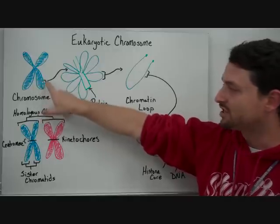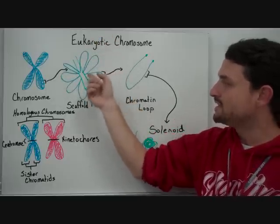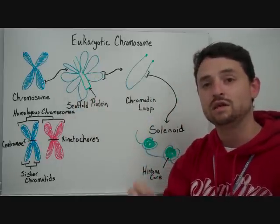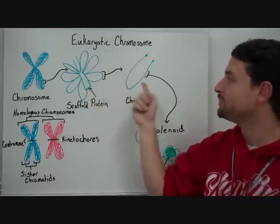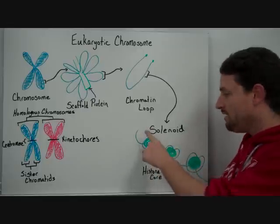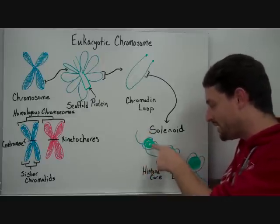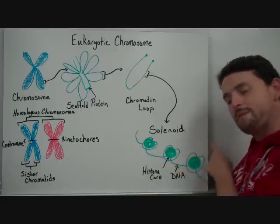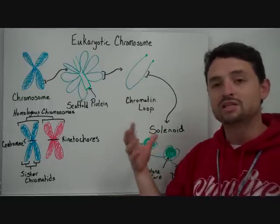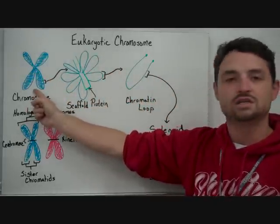If we took just a small section of that chromosome out, we would find a scaffold protein with chromatin loops all around it. Most of the time we see them looped in eights, kind of like a flower around the middle point. That chromatin loop is made up of what we call solenoids — that is DNA wrapped around a histone protein. And that's how it will be stored inside the nucleus. During mitosis, that will condense, condense, condense, condense until you get to the chromosome itself.